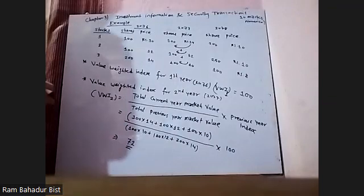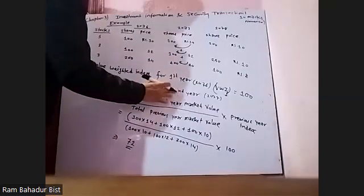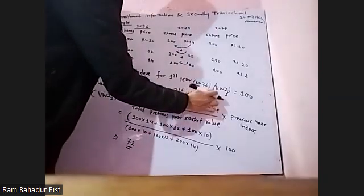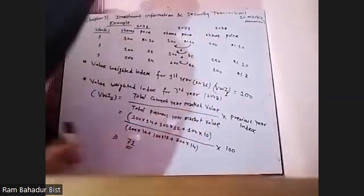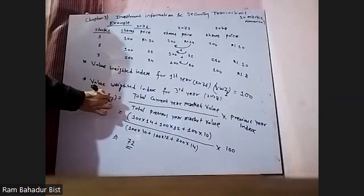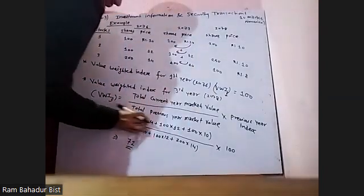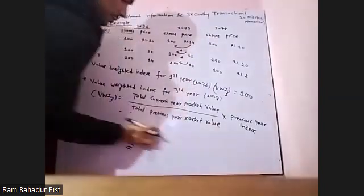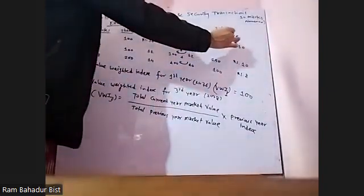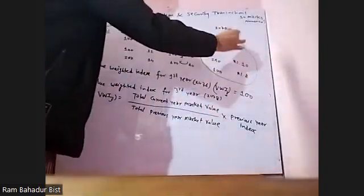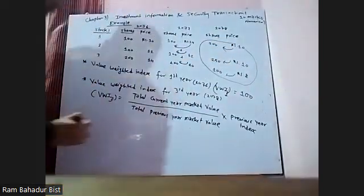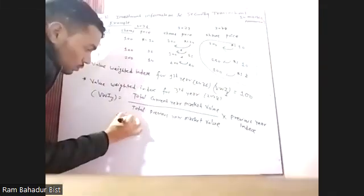I am a value-weighted index for third year. I am going to go to third year. When did 2000 come to 2018? I am going to go to the formula — total current market price. You are going to multiply this year.